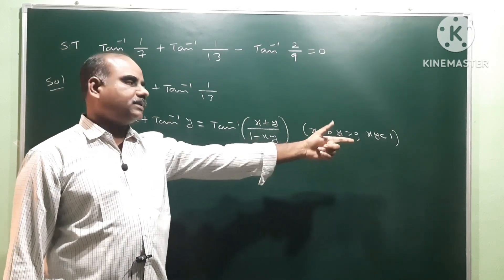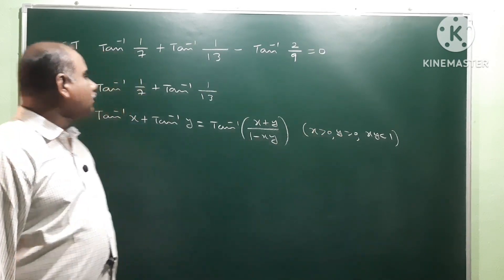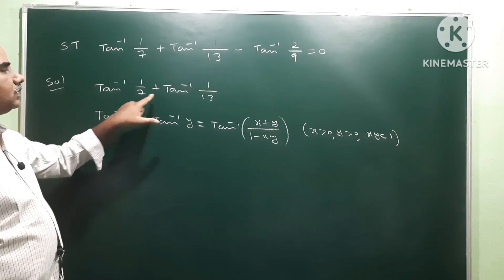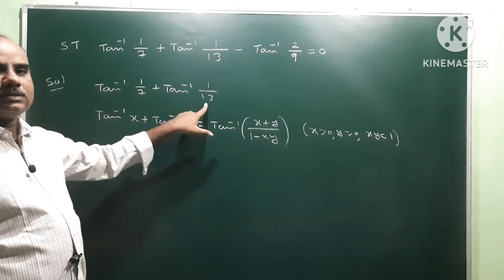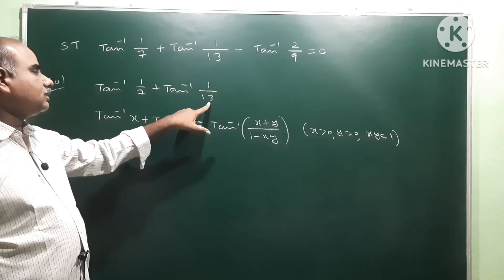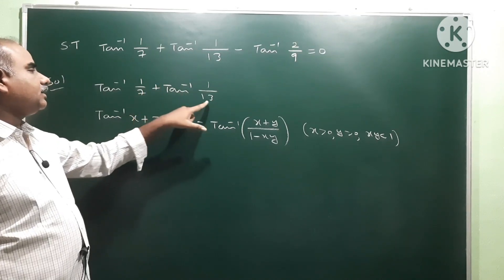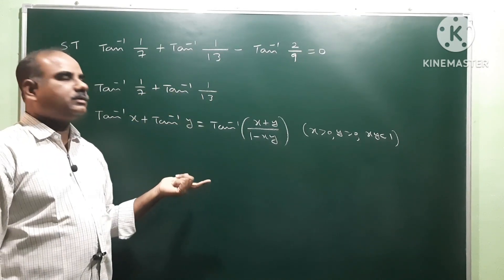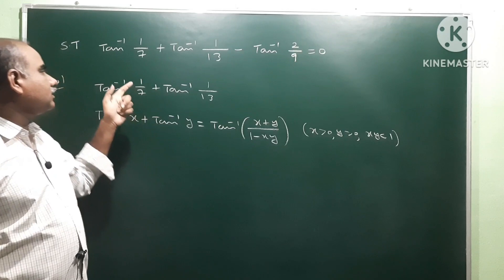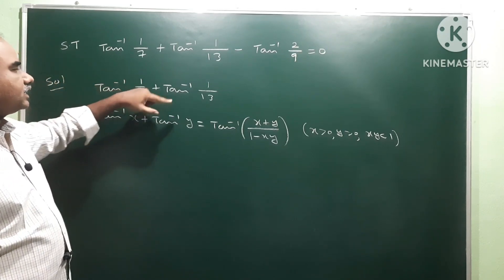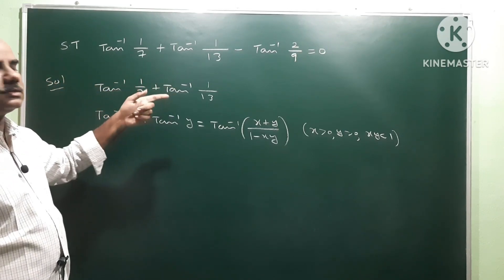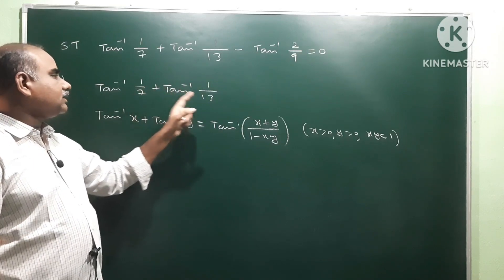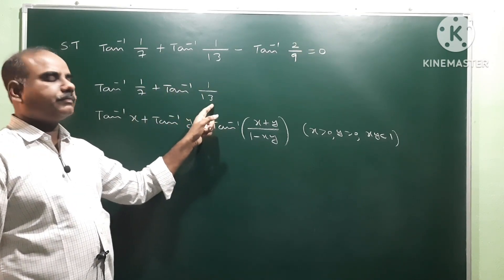So x means 1 by 7, it is greater than 0. y means 1 by 13, it is also greater than 0. And if you multiply these two numbers, we get it is less than 1, because denominators are greater than numerators — numerator is 1 into 1 which is 1, denominator is 7 into 13 which is 91.